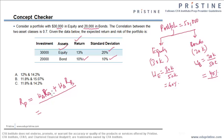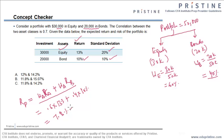The expected return from the portfolio is the weighted average of the assets' returns. W_A is 60% (0.6) and R_A is 13%; W_B is 40% (0.4) and the return is 10%. This becomes 0.6 times 13% which is 7.8%, plus 0.4 times 10% which is 4%, giving an expected portfolio return of 11.8%.